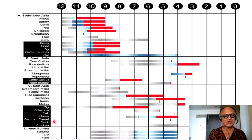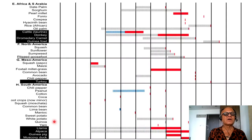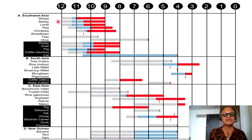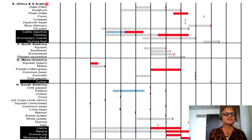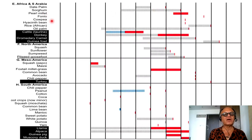Africa and Southern Arabia appear much later in the timeline. Date palm, sorghum, pearl millet, cowpea, hyacinth, taurine cattle, donkey, dromedary camel, and guinea fowl are among the domesticates. So there are different camels here — Bactrian camel and dromedary camel — representing distinct domestication events.